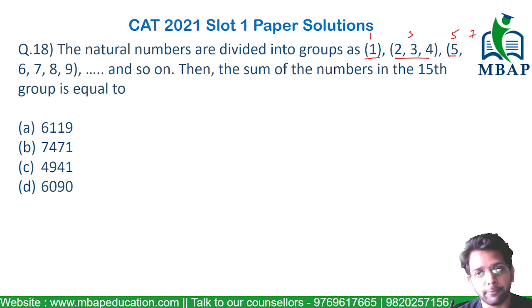We are looking at the 15th group, so from the 15th group to the first group there are 14 groups in between. Each group is going ahead by 2, so the number of terms in the 15th group will be 14 times 2, which is 28, plus the number of terms in the first group, which is 1, giving us 29 terms.